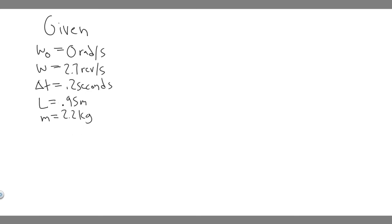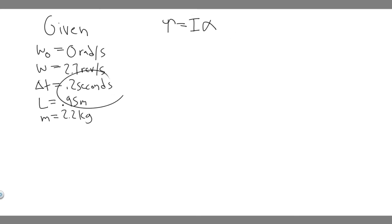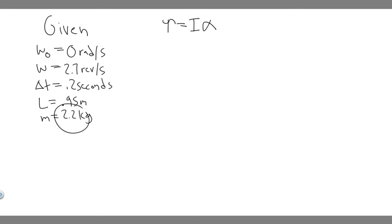So how do we solve this problem? We're trying to find torque, and the formula we need is torque equals inertia times angular acceleration, or alpha. We can solve for alpha because we're given the initial and final angular velocities and the time it takes. And we can solve for inertia since we have the length and the mass. That's why we use this formula.